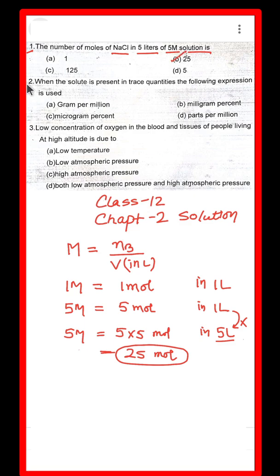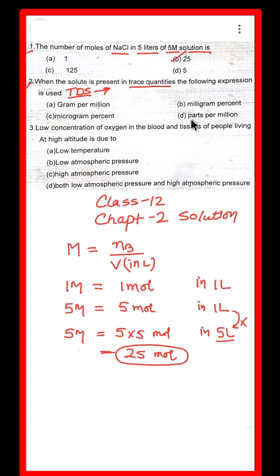The second question asks: if the solute is present in trace quantities, which concentration expression is used? In our homes, the water that comes has total dissolved solids (TDS). Since the amount is in traces, the concentration term used is parts per million (PPM). For example, your home water TDS might be 125 ppm.